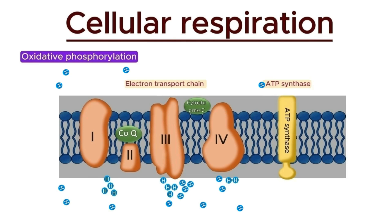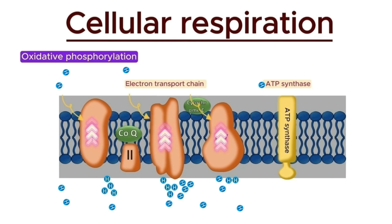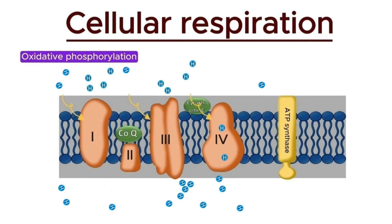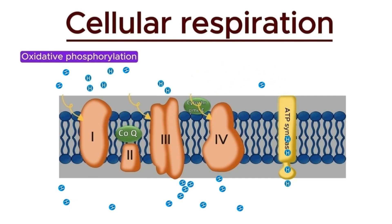Out of these four complexes, complexes one, three, and four are involved in transporting protons across the inner mitochondrial membrane. Specifically, complex one and complex three each pump four protons across the membrane, while complex four pumps two protons. The flow of protons through ATP synthase drives the synthesis of ATP from ADP and inorganic phosphate.